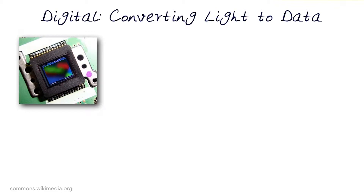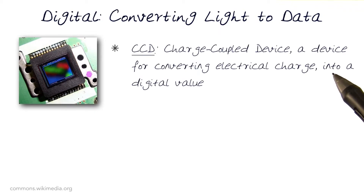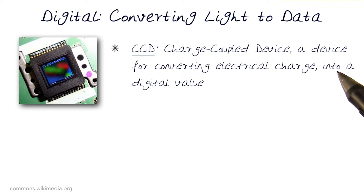Now let's look at the process of how light is converted to data and look at the digital process in parallel to what we just looked at, which was a process for doing it for films. The foundational technology for converting light to data is a CCD — a charged couple device.